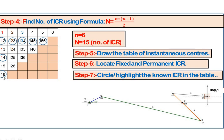Link 1 makes combinations with links 2, 3, 4, 5, 6. Link 2 with 3, 4, 5, 6. Link 3 with 4, 5, 6, and so on. Each link connects with 5 others, giving 15 total ICRs.